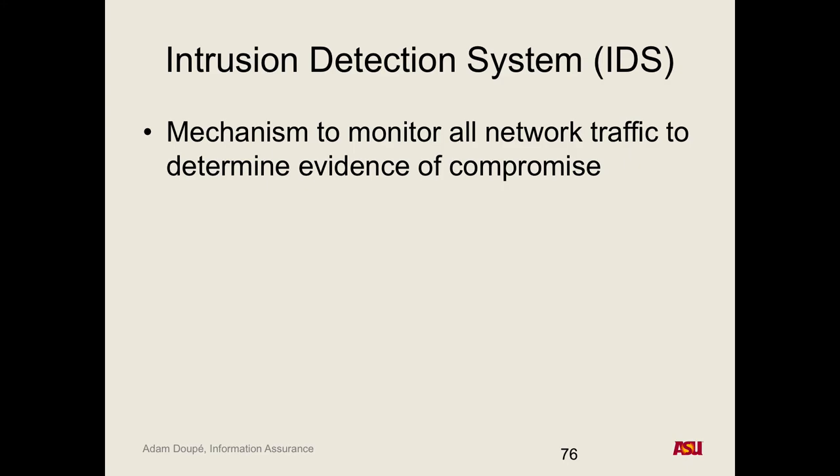There are two main classes of intrusion detection systems. The first is signature-based, where you define rules that identify when an attack or exploit took place and look for that traffic in the network. This clearly has problems because a sophisticated attacker who knows your signatures can still launch a remote code execution attack while evading your rules — it becomes a cat-and-mouse game. The second approach is anomaly detection, where you statistically model normal network traffic and look for outliers.